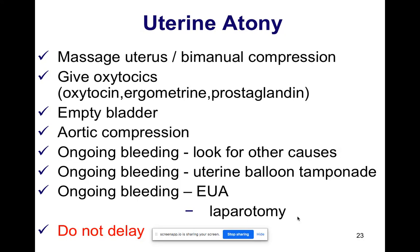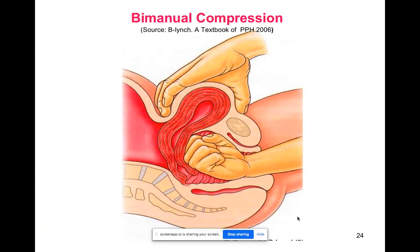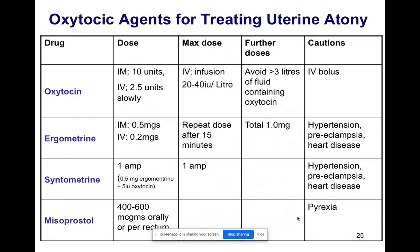Also perform aortic compression and look for other causes such as tears if there is ongoing bleeding. If bleeding persists, insert a uterine tamponade balloon especially if transferring a patient or cannot take her to theatre. However, if theatre is available and someone senior is present, take the patient for EUA — examination under anesthesia — place the patient in Lloyd Davis position, and do not delay a laparotomy, otherwise you will lose the patient. This is bimanual compression: one hand on the fundus and the other in the posterior fornix of the vagina, helping the uterus to contract.